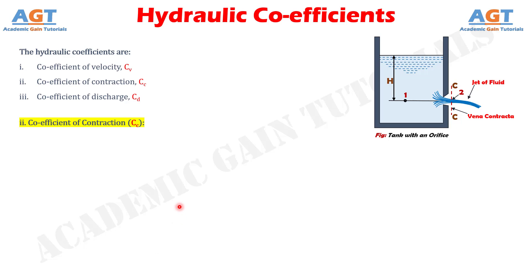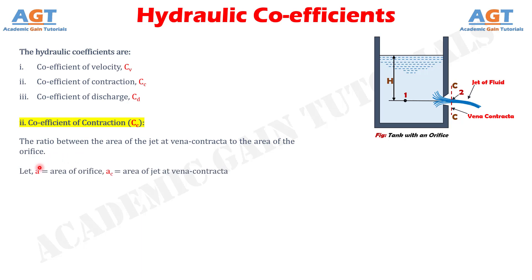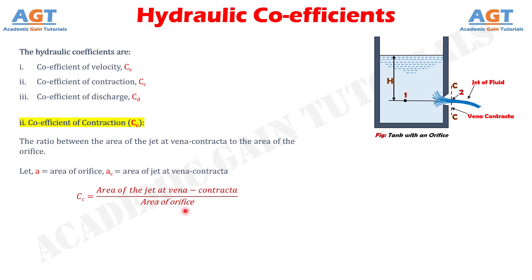The second hydraulic coefficient is the coefficient of contraction. The coefficient of contraction is defined as the ratio of the area of the jet at Vena Contracta to the area of the orifice. It is denoted by CC. Let us consider A equals to area of orifice and Ac equals to area of jet at Vena Contracta. Then, coefficient of contraction CC equals to area of jet at Vena Contracta divided by the area of orifice, which is again equal to Ac divided by A.